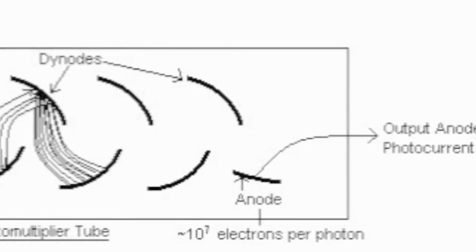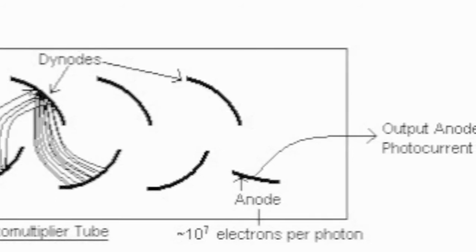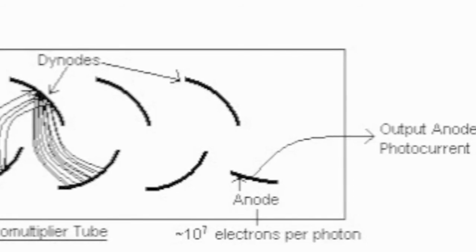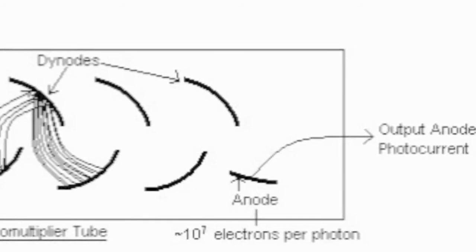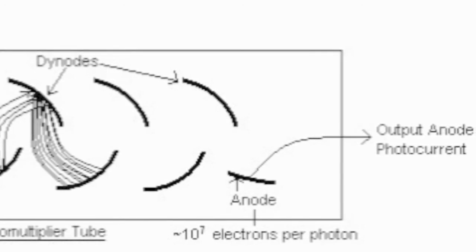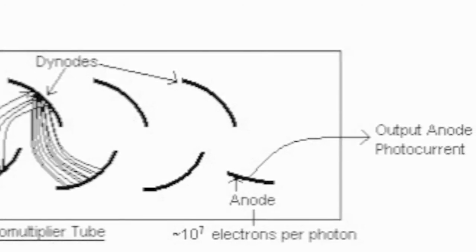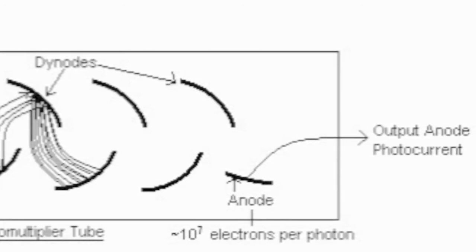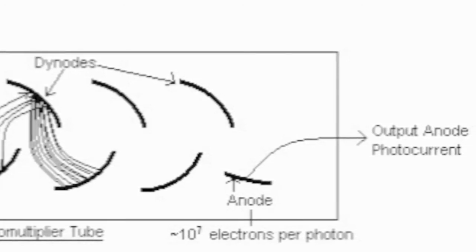That's how it amplifies a signal, turns it into electricity from light, amplifies it using the dynodes, and then actually turns it into electric current. And then I use a resistor to turn that current into voltage, which you can sense. So that's the photomultiplier tube.